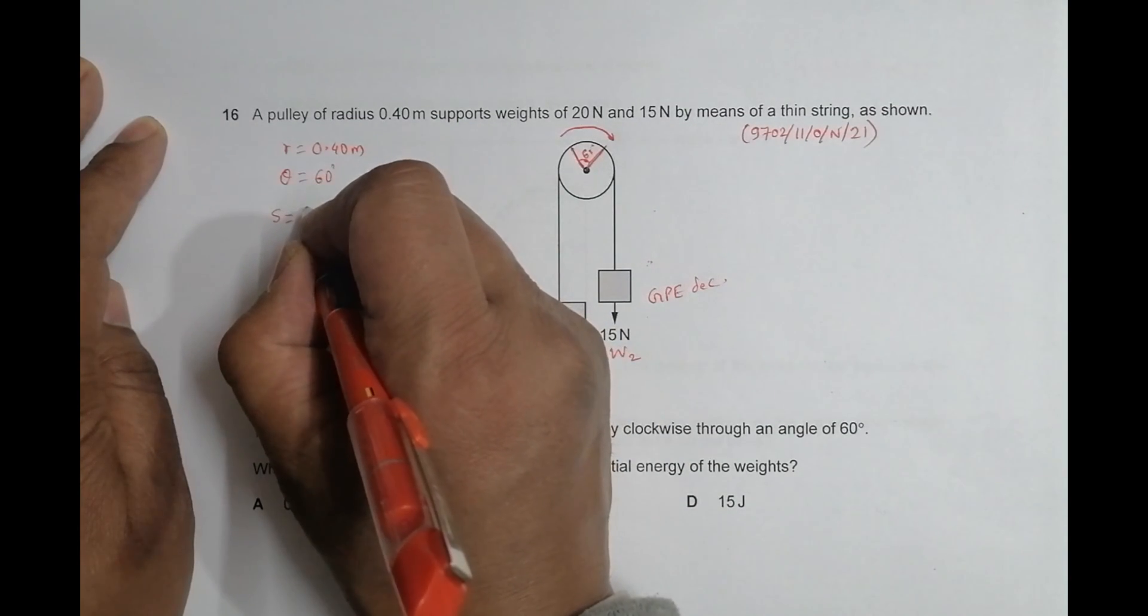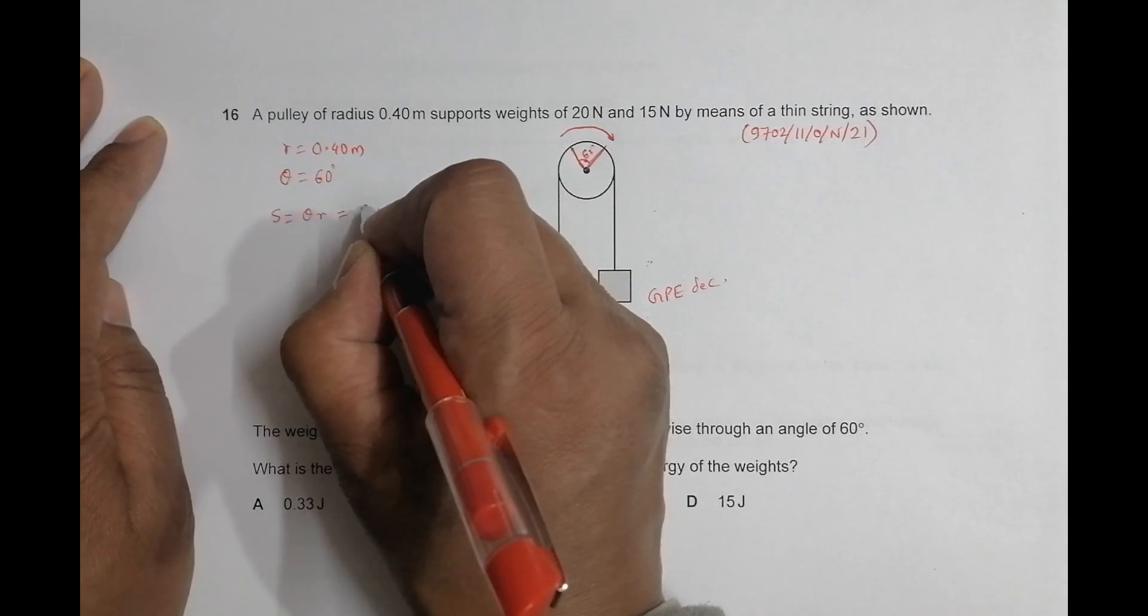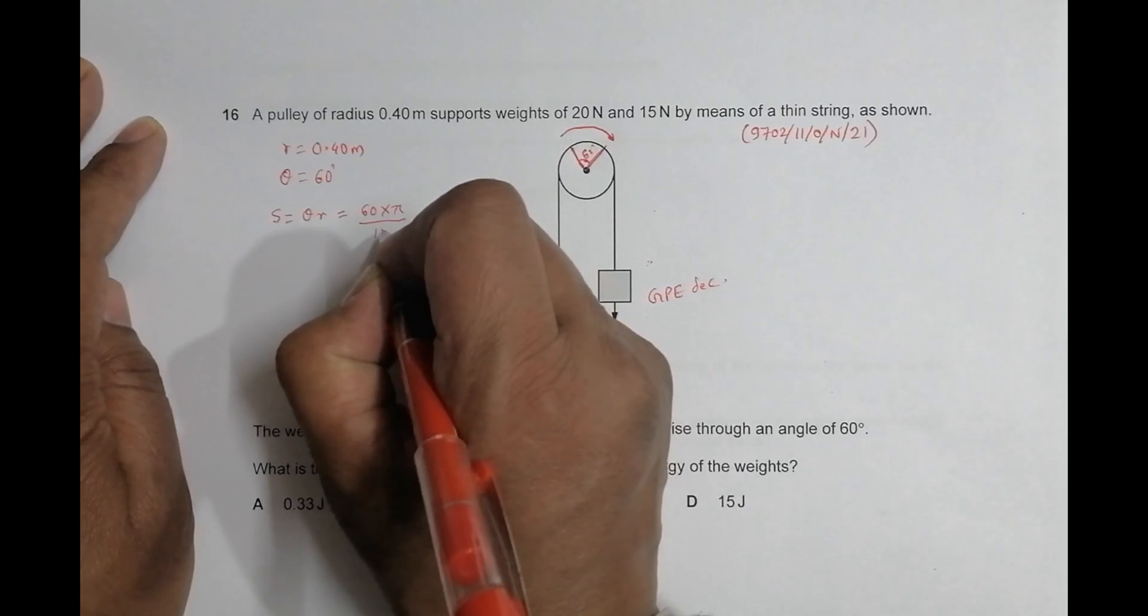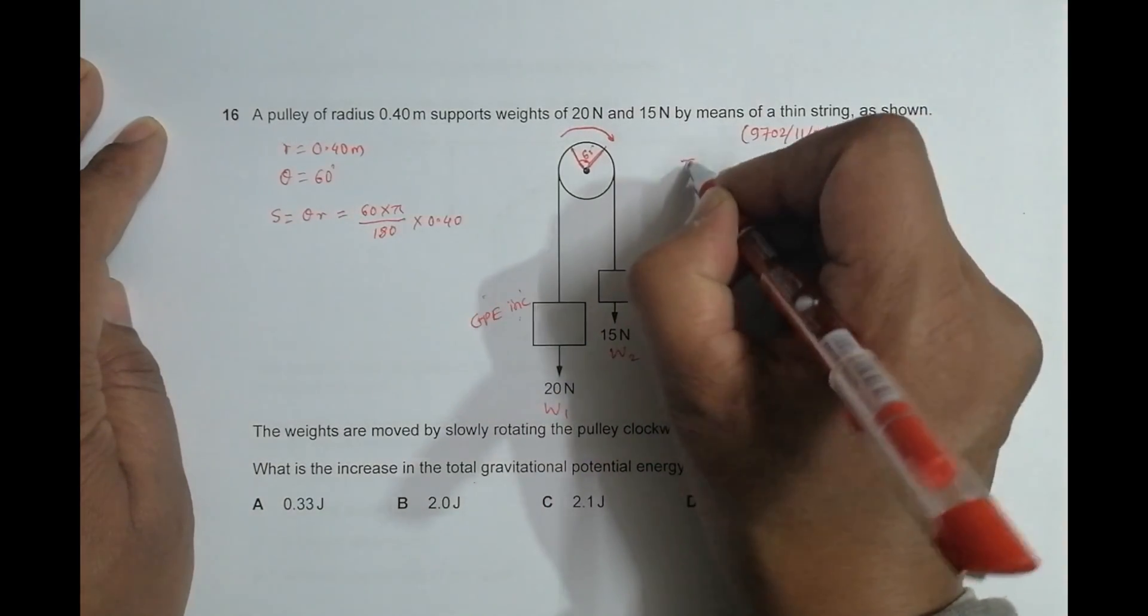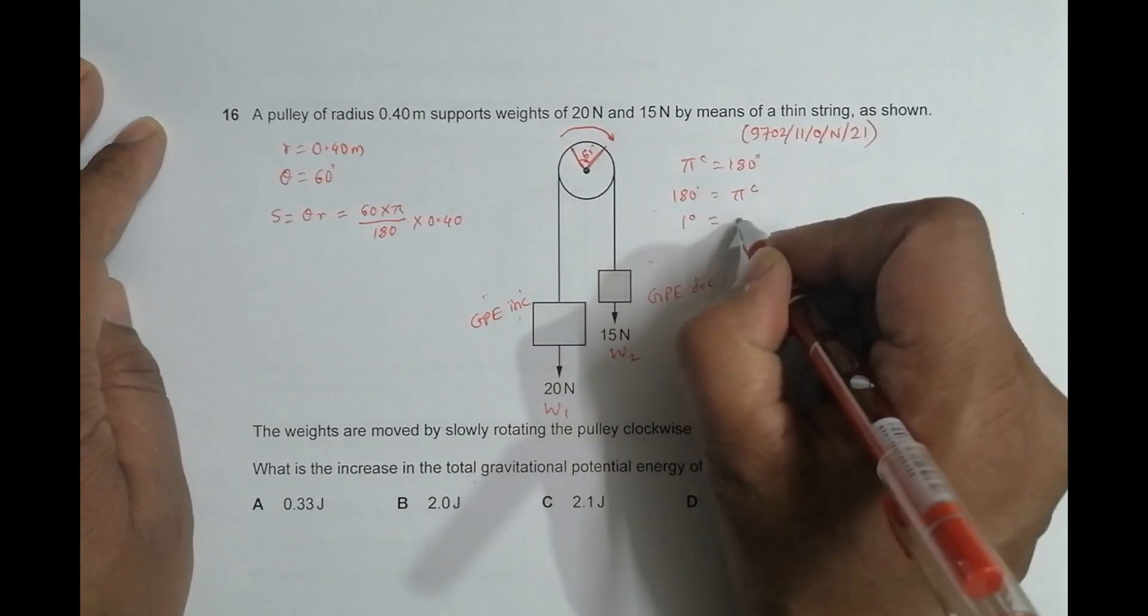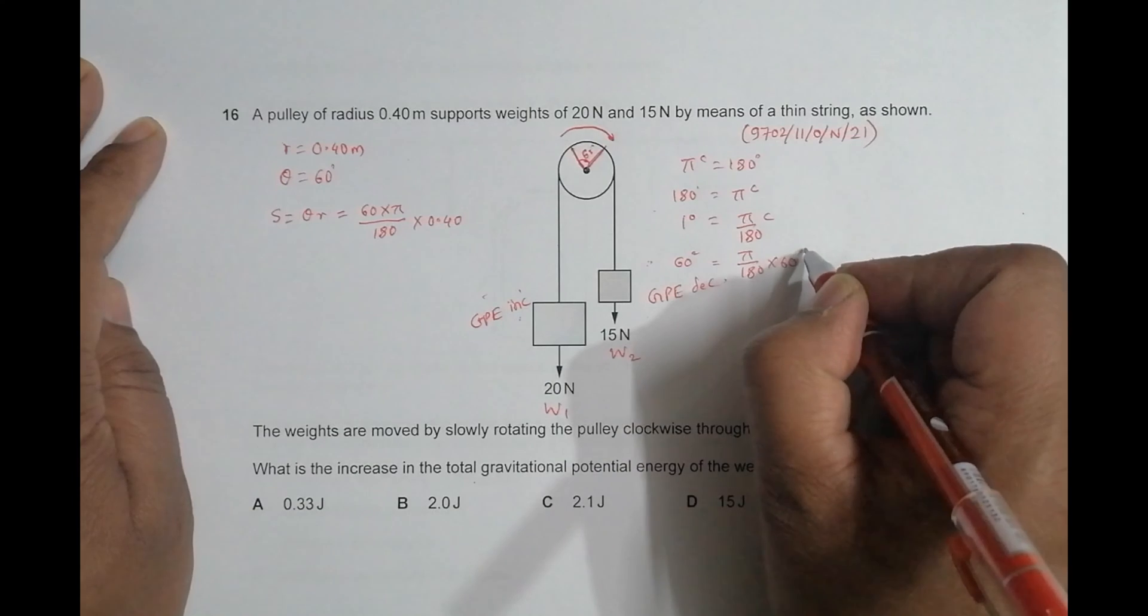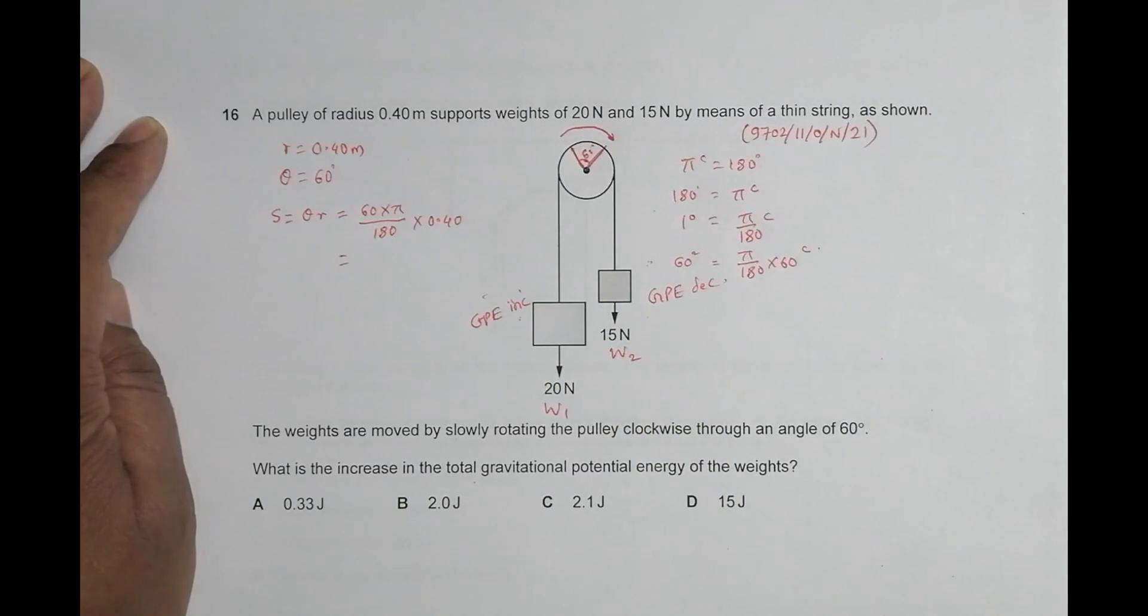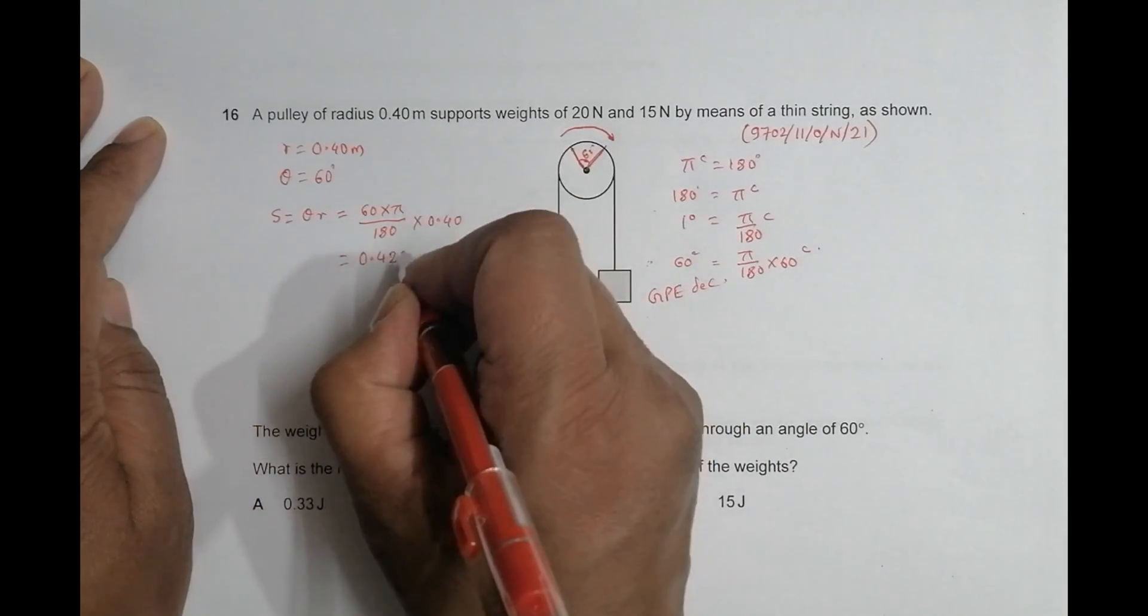That angular displacement is equal to S is equal to theta into R. Theta should be in radians. So this 60 degree should be 60 into pi by 180 radians into this R is 0.40. We know that pi radians is equal to 180 degrees. So 1 degree equal to pi by 180 radians and 60 degree is equal to pi by 180 into 60 radians. So when I do the calculation, it will be 60 into pi divided by 180 into 0.4 is equal to 0.42 meters.